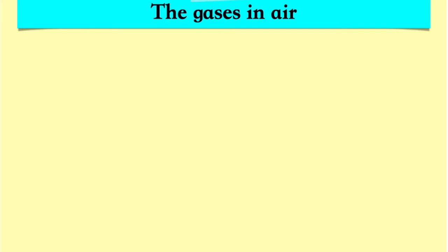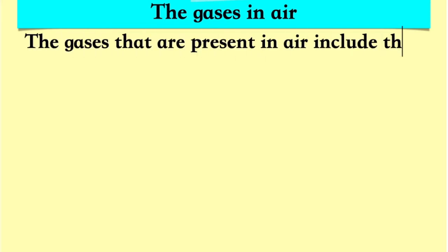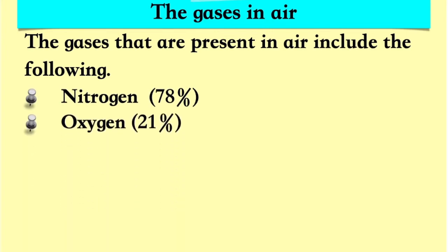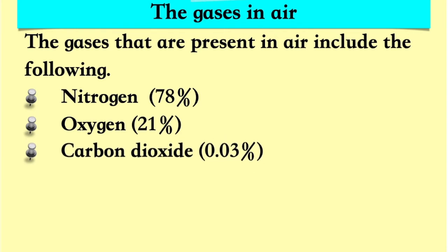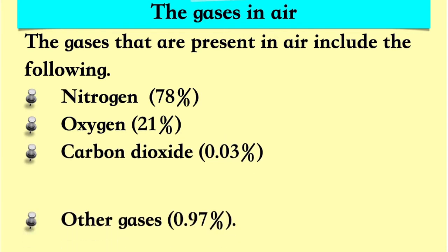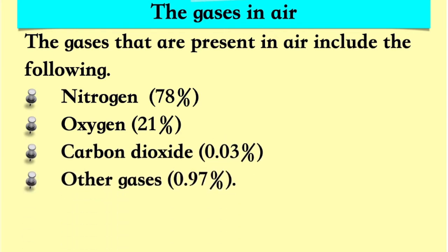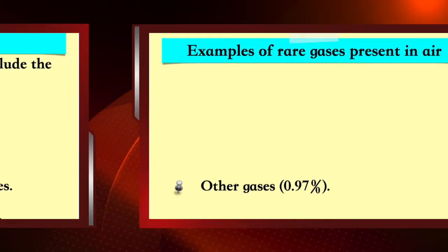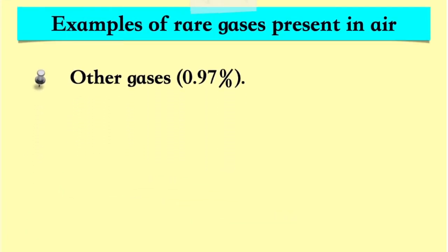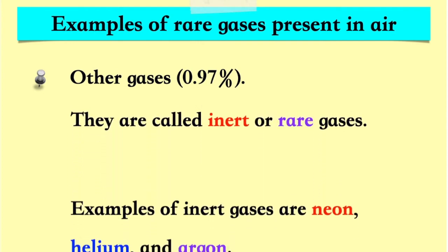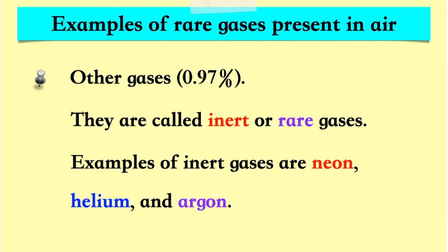The gases that are present in air include the following: Nitrogen, 78%. Oxygen, 21%. Carbon dioxide, 0.03%. Other gases, 0.97%. Other gases are also called inert or rare gases. Examples of inert gases are neon, helium, and argon.